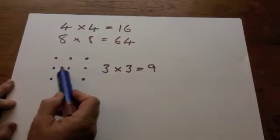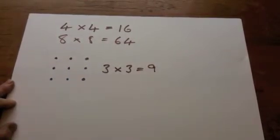1, 2, 3, 4, 5, 6, 7, 8, 9. 3 squared is 9. 9 is a square number.